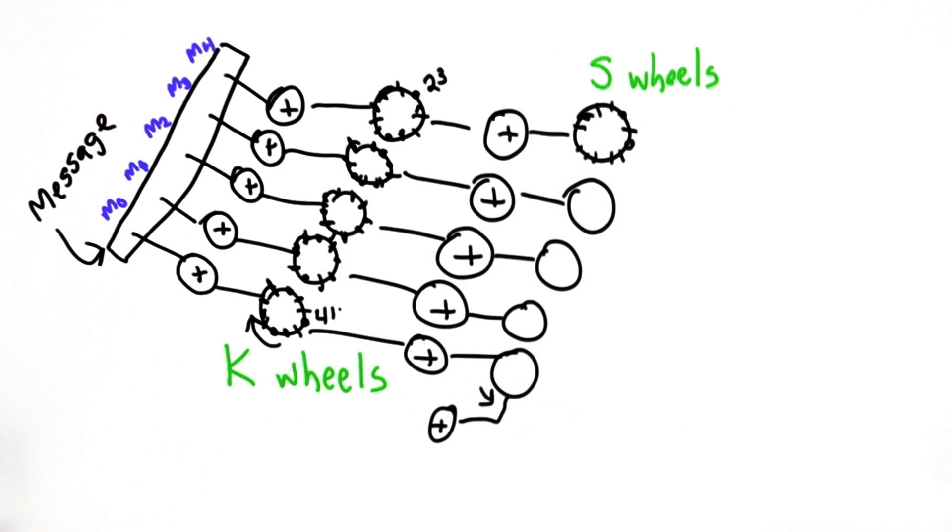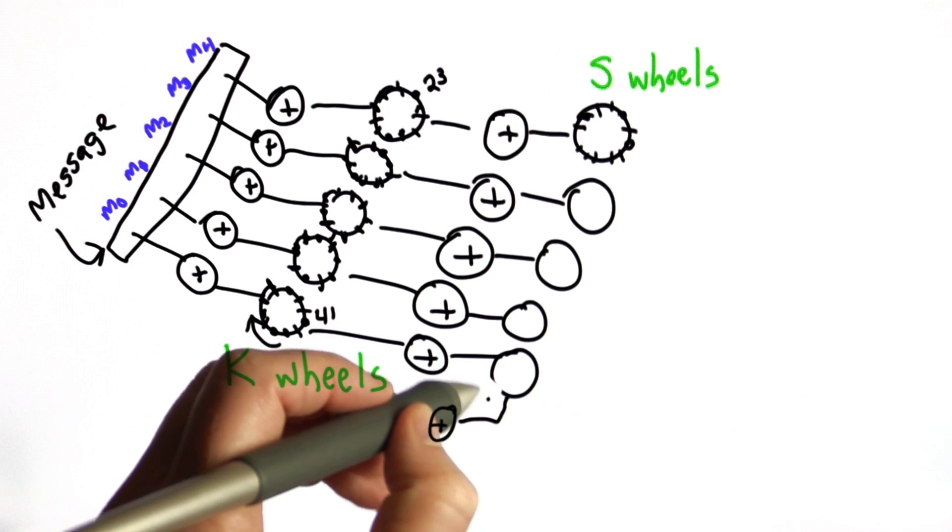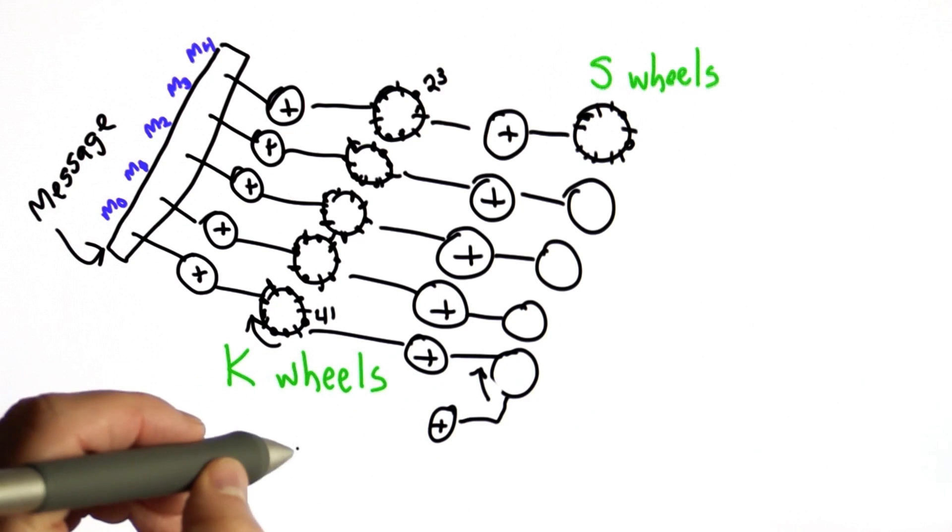The difference was the K wheels turned every character. The S wheels only turned conditionally on the result of two other wheels, which were the M wheels.